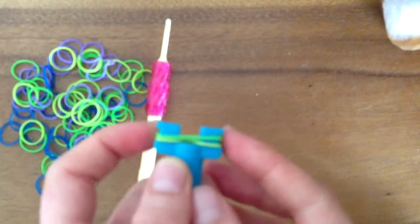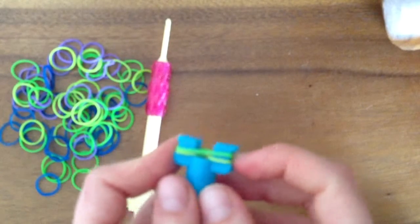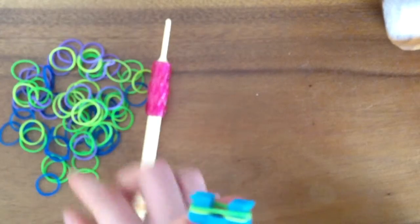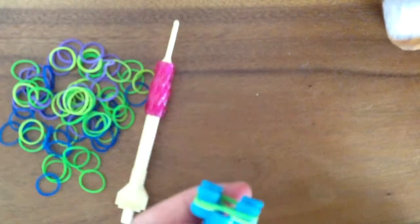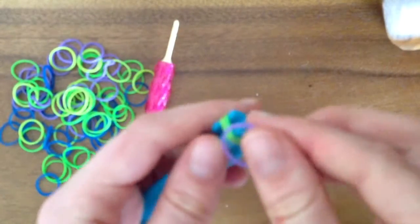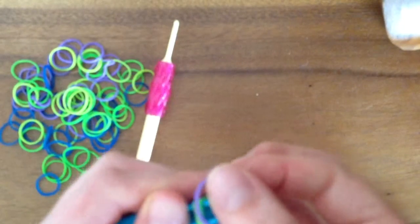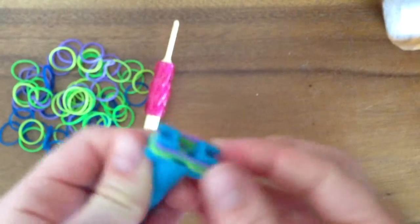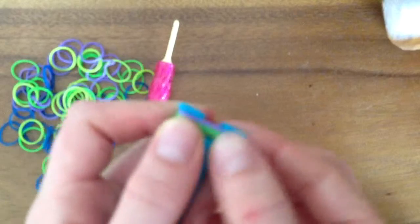Now as you can see, you have two rubber bands on the mini loom. Then we're going to take our third color and place it right on top of that. So now I have three rubber bands on the mini loom.